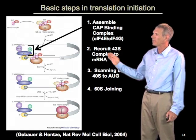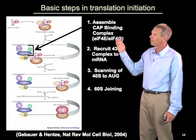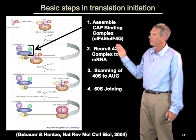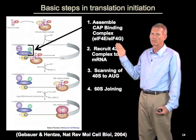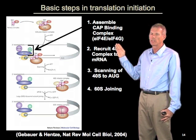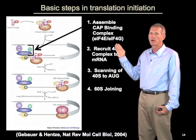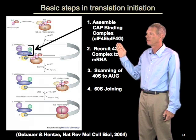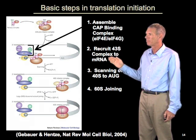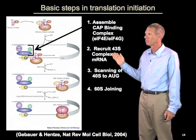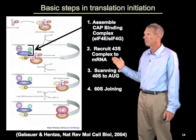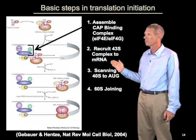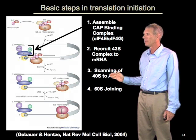I want to emphasize these two phases: one, assembly of the cap binding complex as an initial stage to build an mRNA–protein complex which can receive ribosomes; and then a second step, where the ribosome is recruited — typically the small subunit first — and then recognition of the AUG.